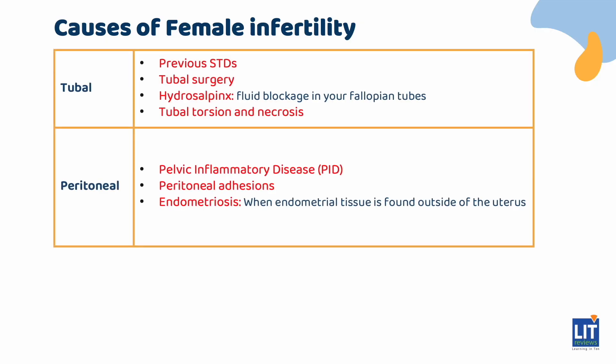Tubal factor is straightforward: if a patient has a previous sexually transmitted disease, tubal surgery, ligation, or other injury, the tube may prevent the egg and sperm from interacting. Very rarely, fallopian tube torsion can result in a necrotic, non-viable tube. Lastly, there is a broad category of peritoneal factors, including pelvic inflammatory disease, adhesions, and endometriosis — when endometrial tissue is found outside the uterus. It's a pro-inflammatory state that is toxic to eggs and embryos.